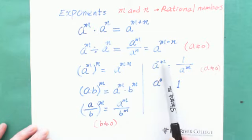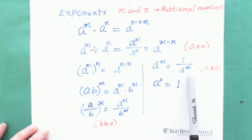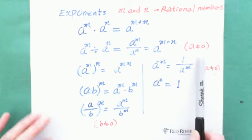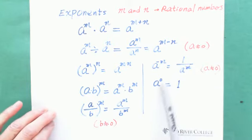A negative exponent moves to the bottom. A negative exponent on the bottom moves to the top. And a zero exponent gives you one.